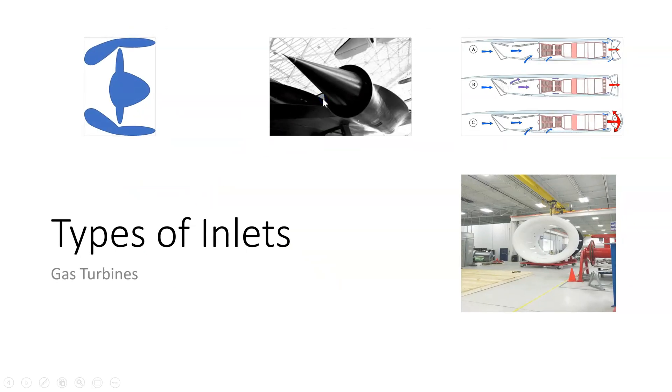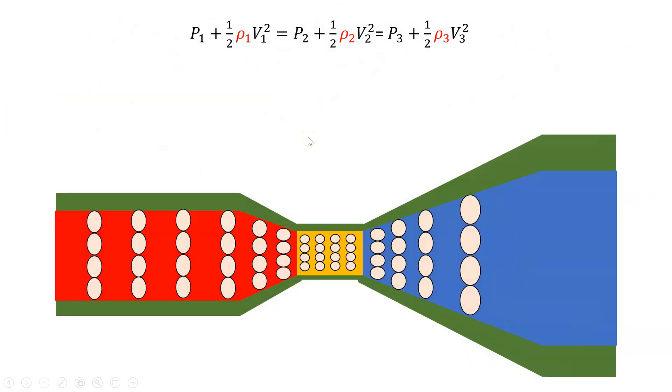If I look at a supersonic aircraft, and again if we just review Bernoulli's theorem for a supersonic aircraft, when the air is coming in, it's very fast. So if this is supersonic air, for the air to get through the duct, it has to compress.